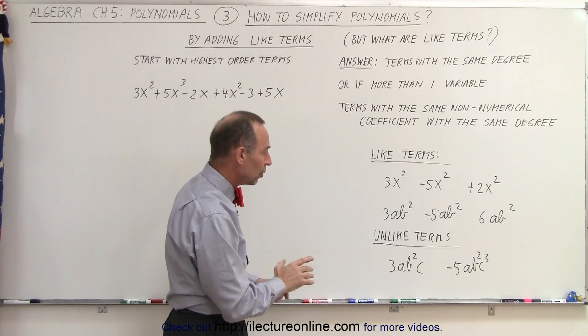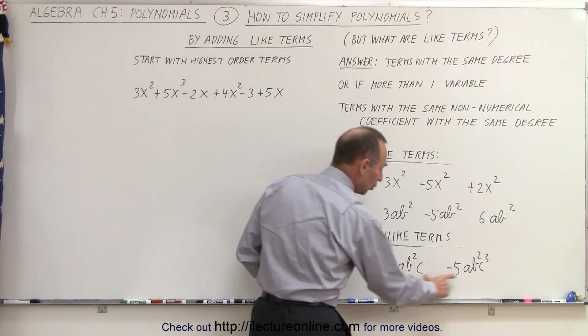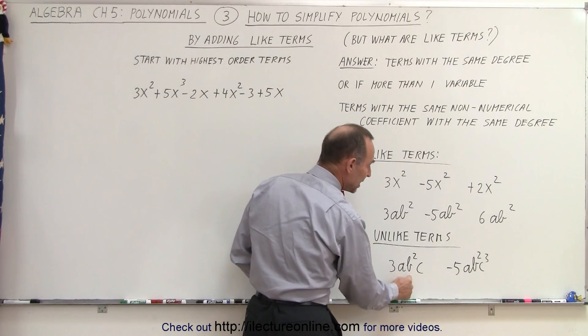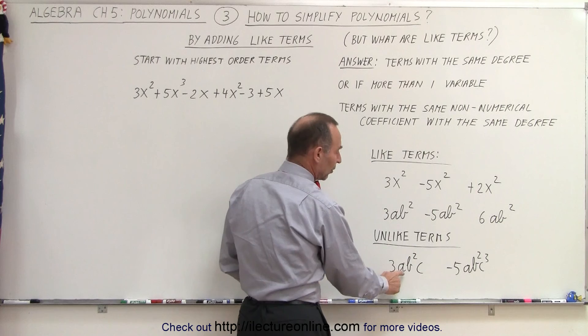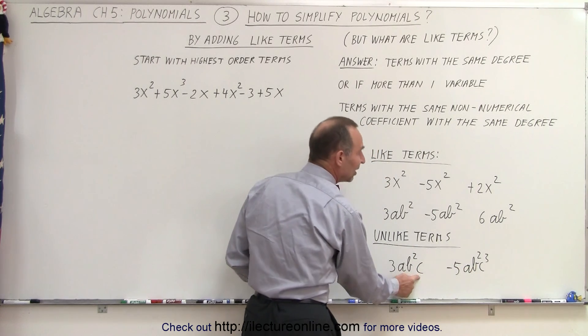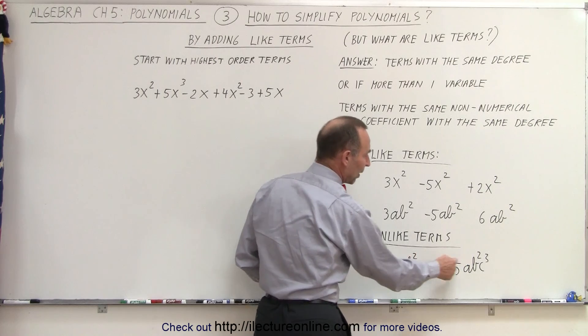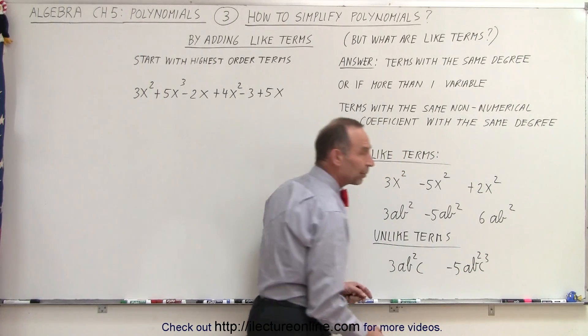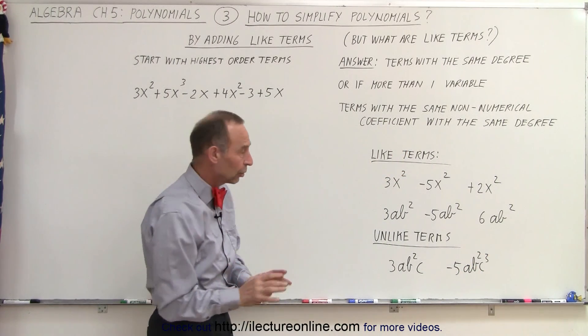On the third example, notice both terms have an a, a b, and a c in them. But even though a has the same power, b has the same power, c does not. c is raised to the first power and c is raised to the third power there. Therefore, they're not called like terms.